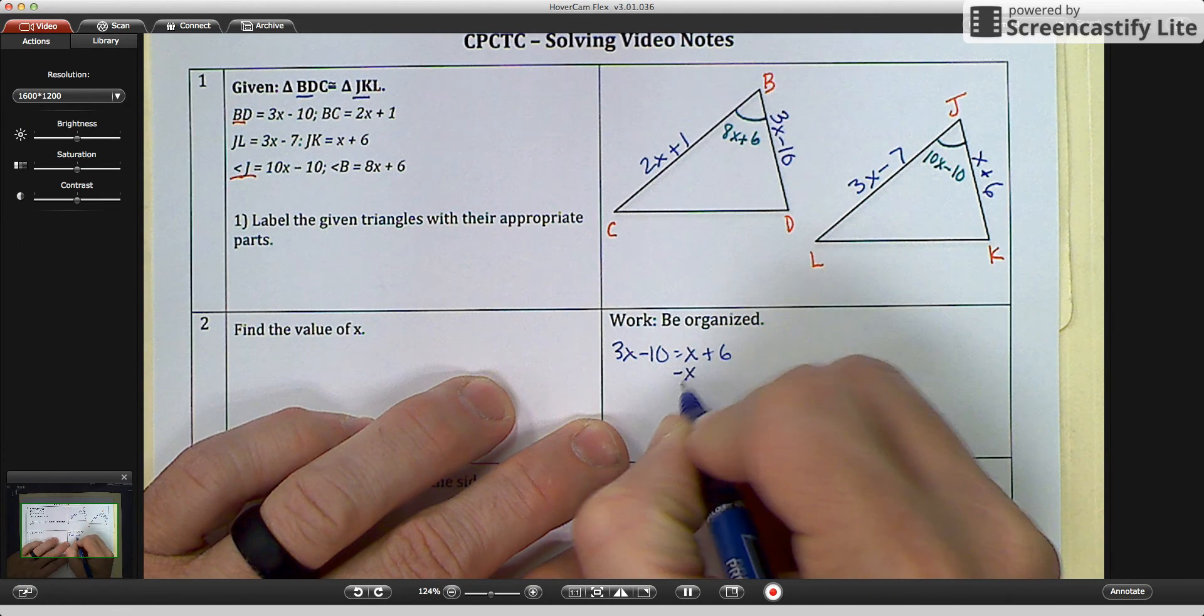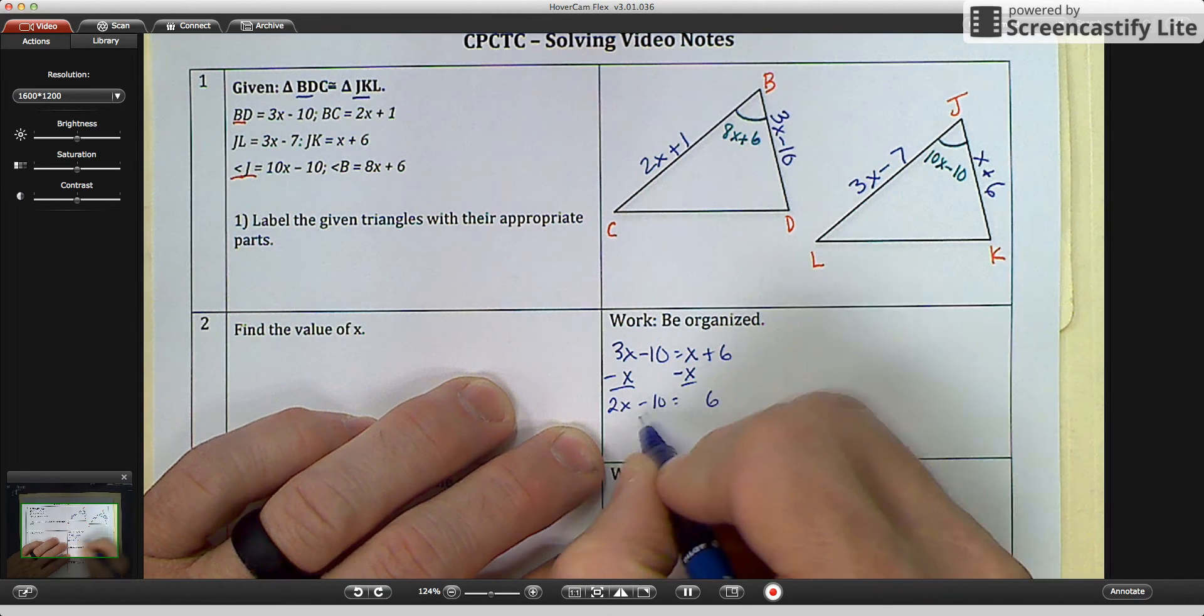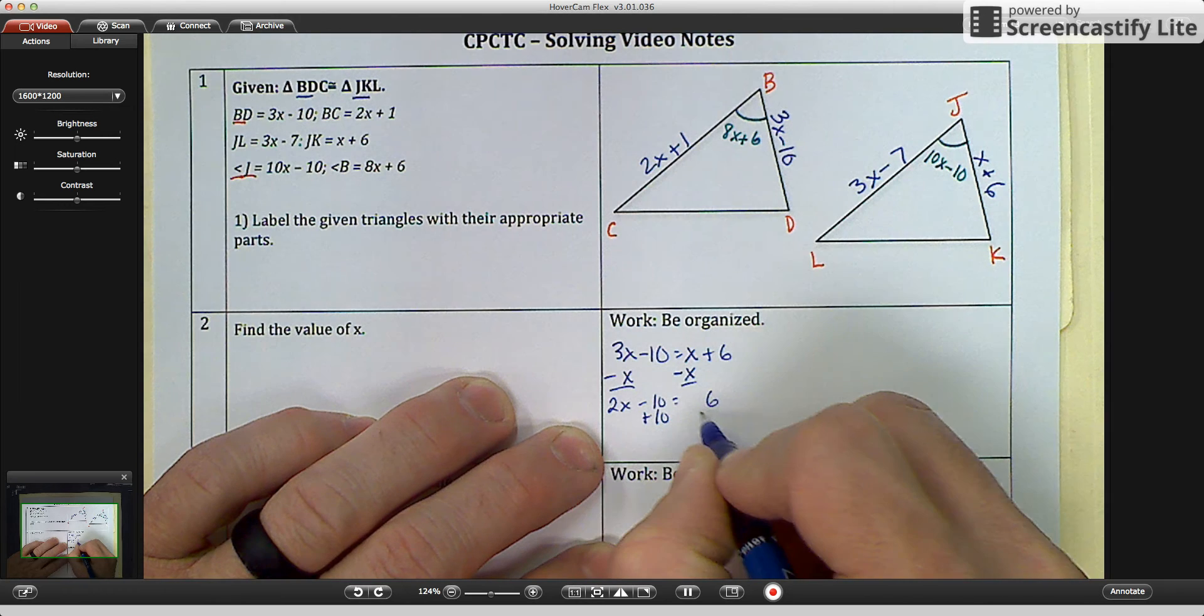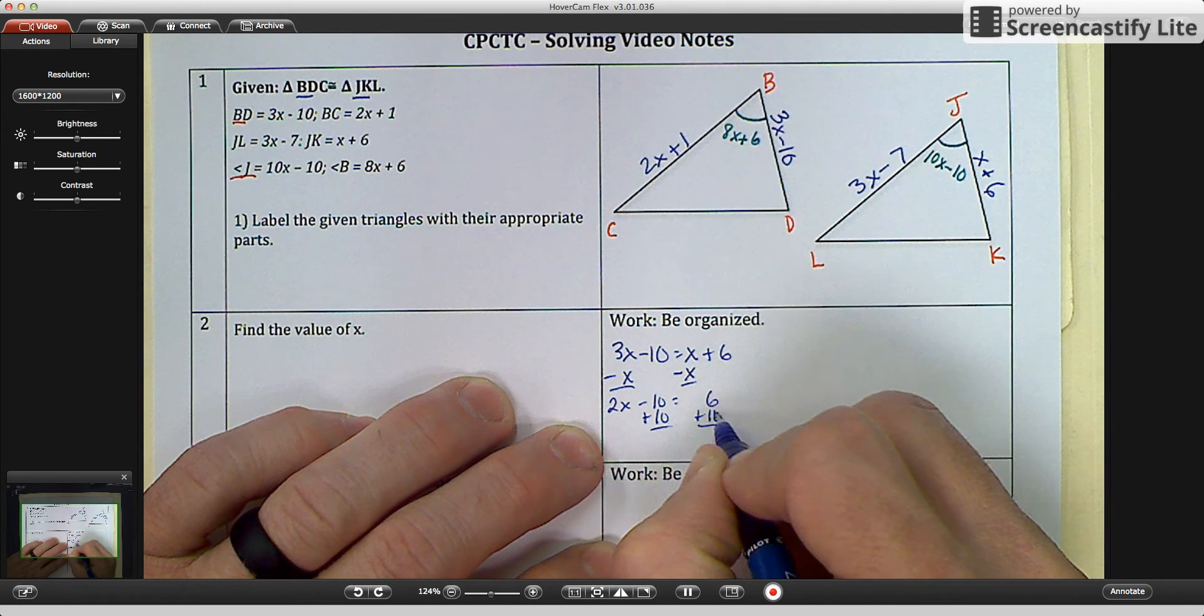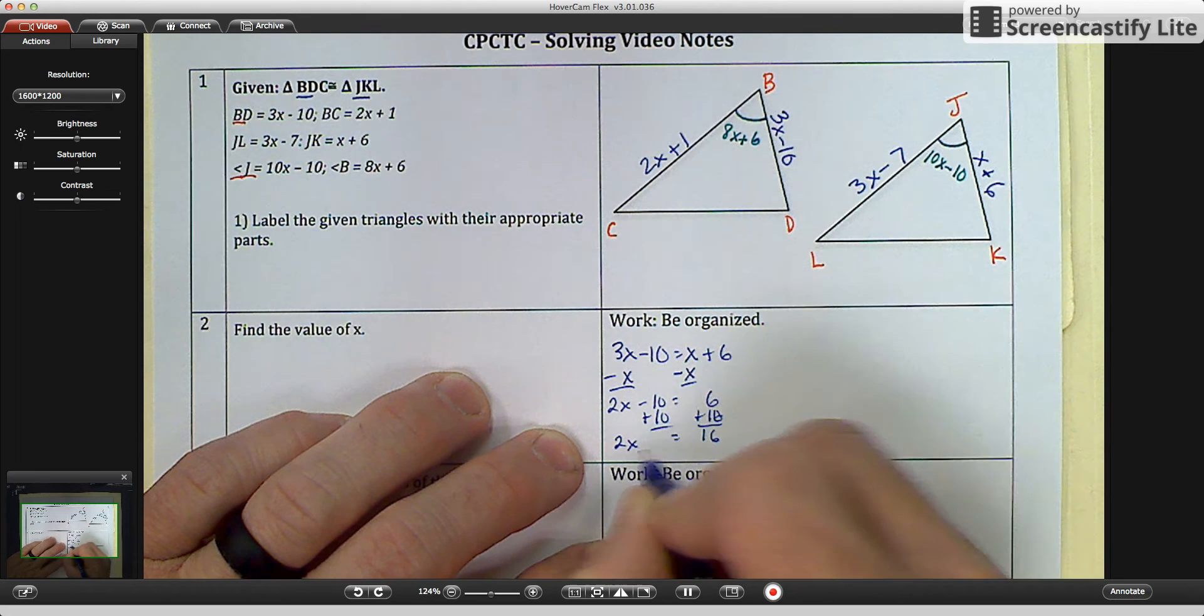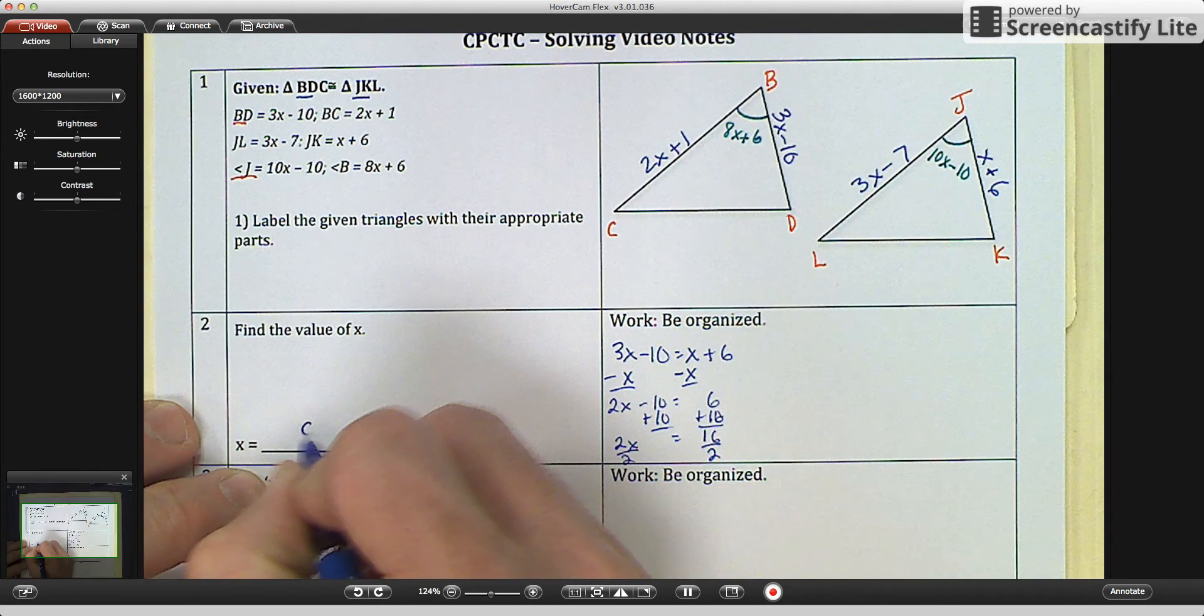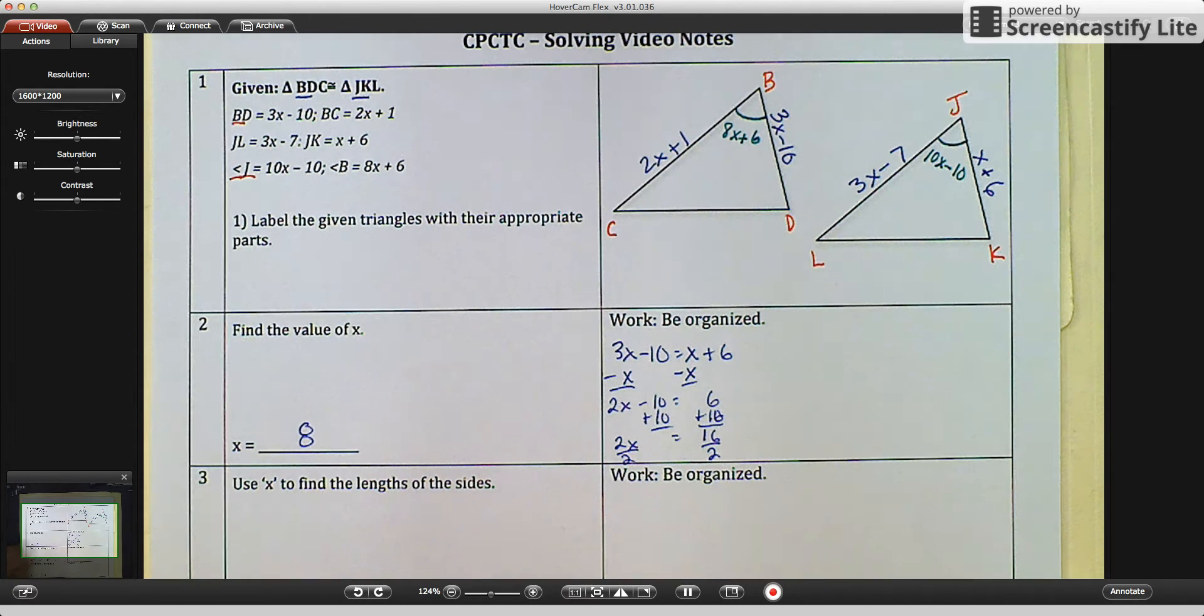Subtract an X. You get 2X minus 10 equals 6. Add 10. You would get 2X equals 16. Divide by 2. And you get X equals 8.